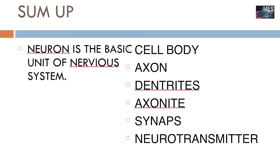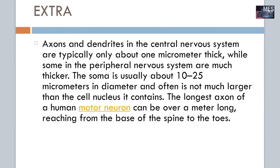To sum up, today we went through what is a neuron — the basic unit of the nervous system. We discussed what a cell body is, what an axon is, what dendrites are, and what a synapse is. To add on, axons and dendrites in the central nervous system are typically only about 1 micrometer thick, while some in the peripheral nervous system are much thicker. The soma is usually about 10 to 25 micrometers in diameter. The longest axon of a human motor neuron can be over a meter long, reaching from the base of the spine to the toes. You can also find neurons which are myelinated and non-myelinated.